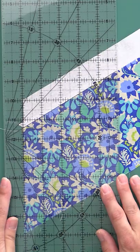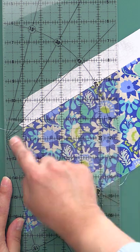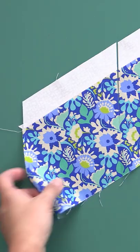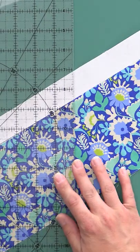Press that open. I'm lining up the 60 degree line with that seam allowance, and I'm just gonna give that a trim. We're gonna be able to get two more out of this strip.